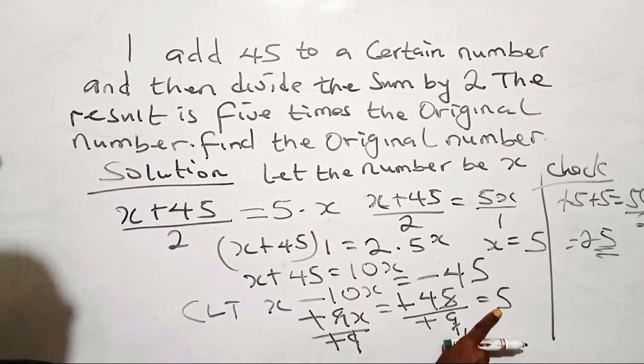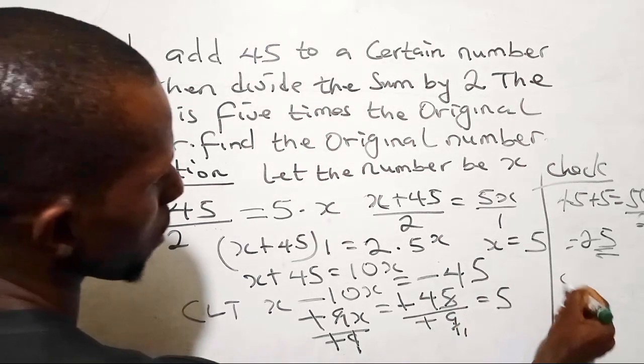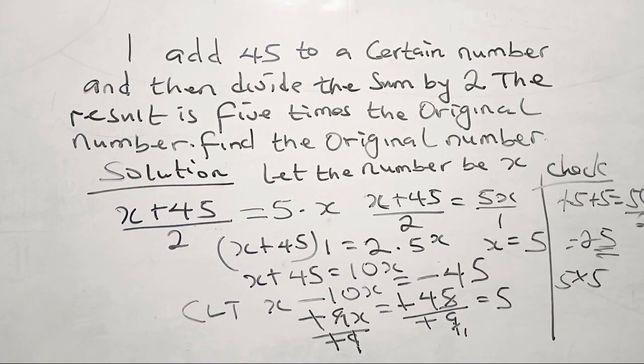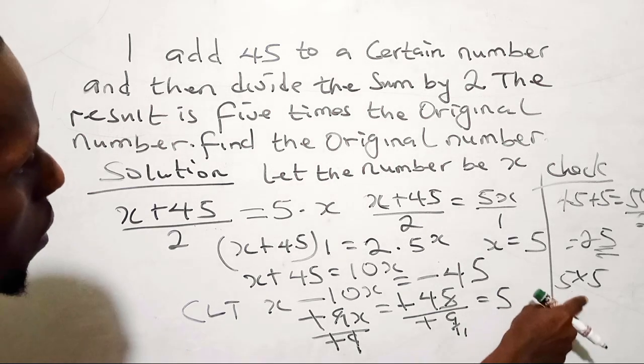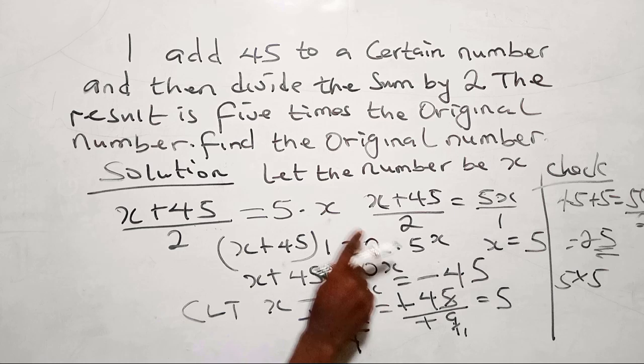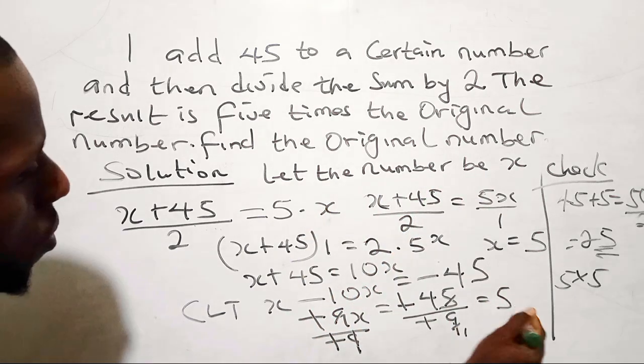Don't forget, the original number is 5. So when you say 5 times 5, we have 25. So 5 times the original number equals my results. So that means the value of x is 5.